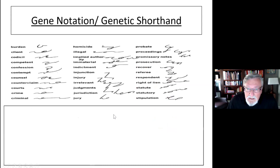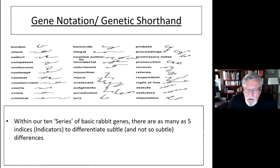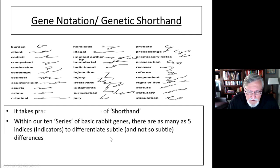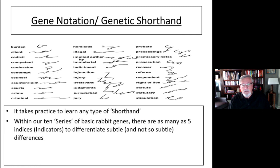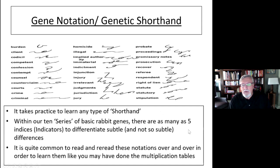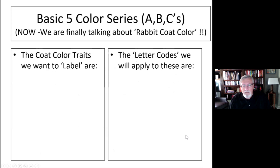Let's talk about shorthand. Within our ten series of basic rabbit genes, there are as many as five different indices or indicators to differentiate subtle and not-so-subtle differences. I'm going to explain the five series and how many different subsets there are in each. It takes practice to learn any type of shorthand — you're going to be able to memorize the different codes we have for our rabbit genetics.